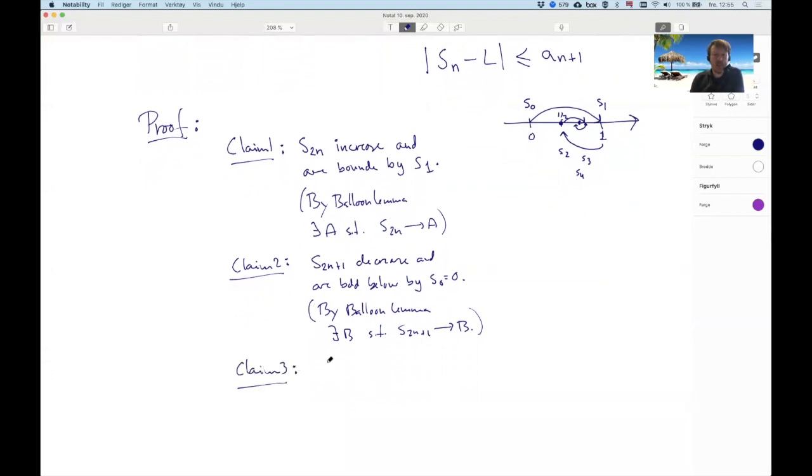And what can we do now? Well, the next claim would be that the S_{2n}s and their neighbors S_{2n+1}, that their difference tends to zero as n goes to infinity. And that this means that A is equal to B, which we then can call L. So this reveals to us who L should be. It's the common value of these two guys.